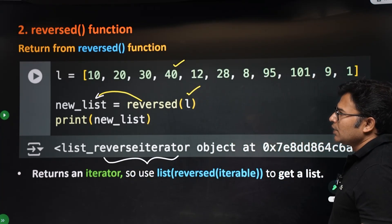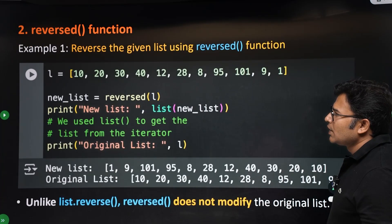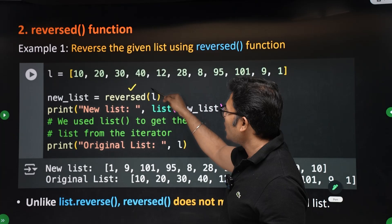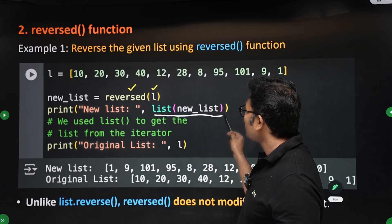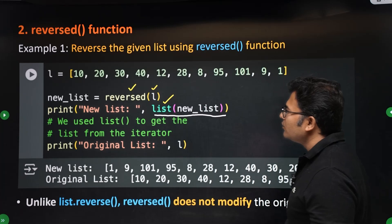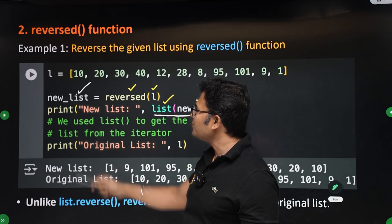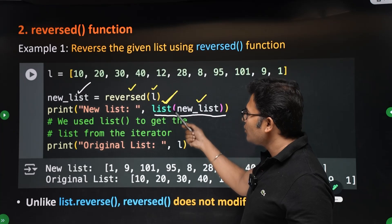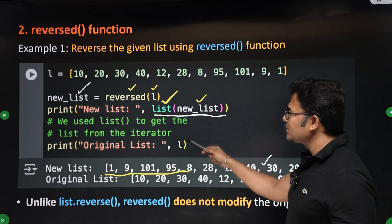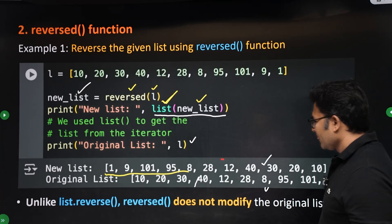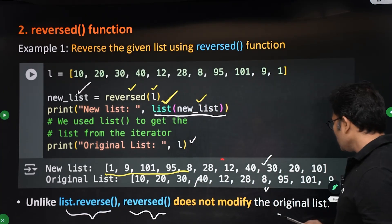Since reversed() returns an iterator object and not a list, you need to convert the result into a list using the list() constructor: list(reversed(l)). When you print it, you see the reversed elements, and the original list l remains unchanged. So whether you use list.reverse() or reversed(), neither modifies the original list.